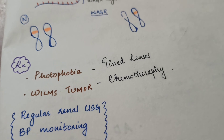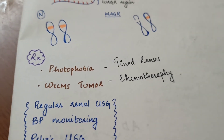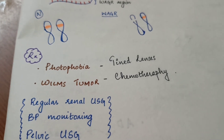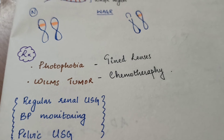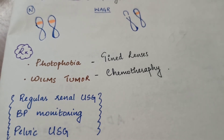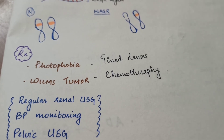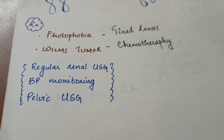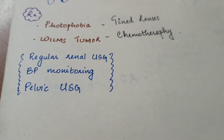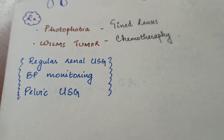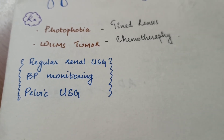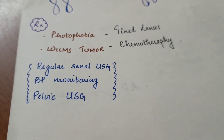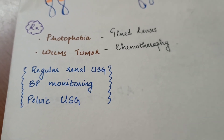Treatment addresses each problem individually. For photophobia, tinted lenses are given. For Wilms tumor, the combination of chemotherapy and radiotherapy is used. Most importantly, timely diagnosis allows adequate medical surveillance including regular renal ultrasound, BP monitoring, and pelvic ultrasound — especially in females to detect streak ovaries early and reduce the risk of gonadoblastoma.